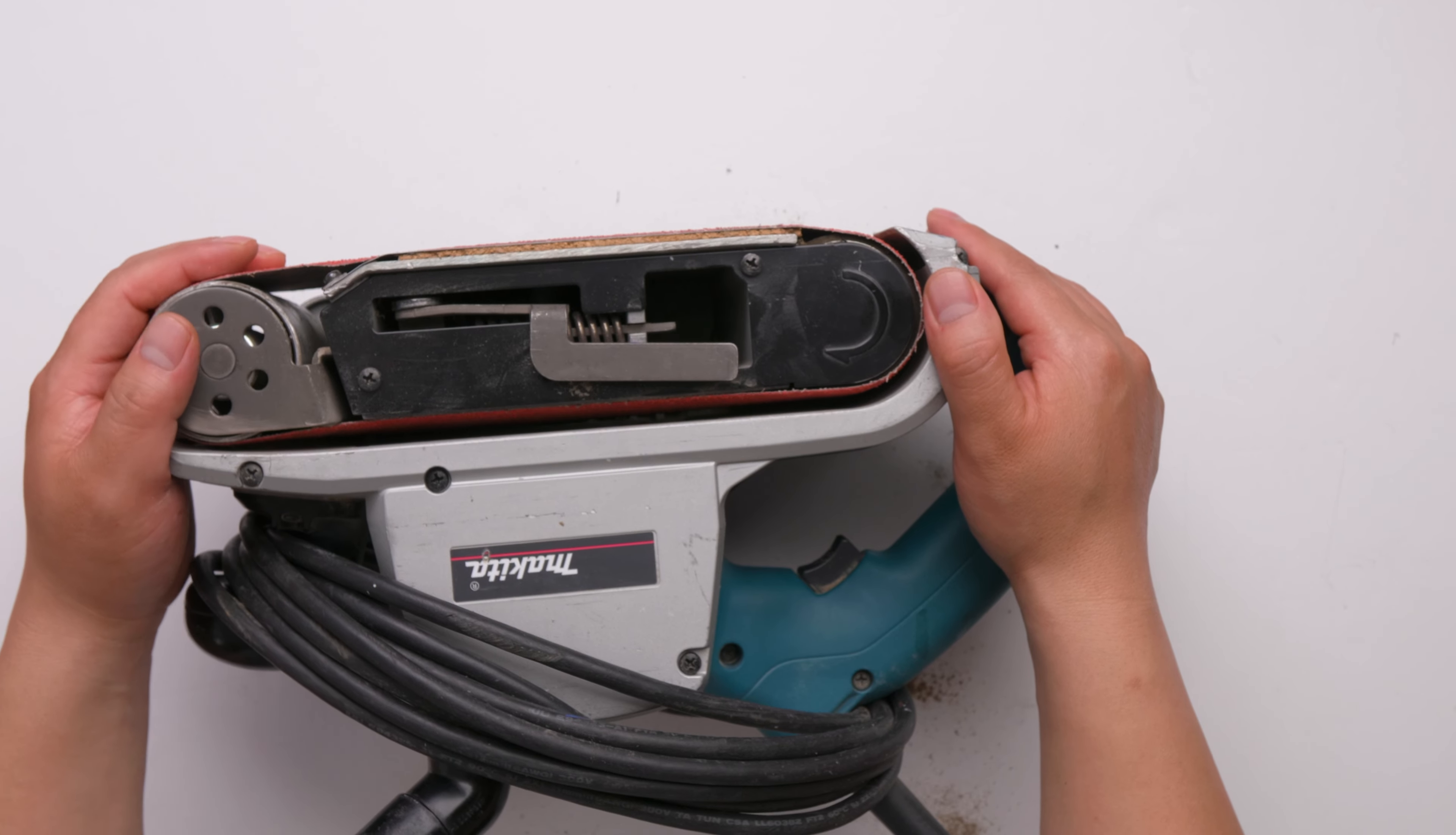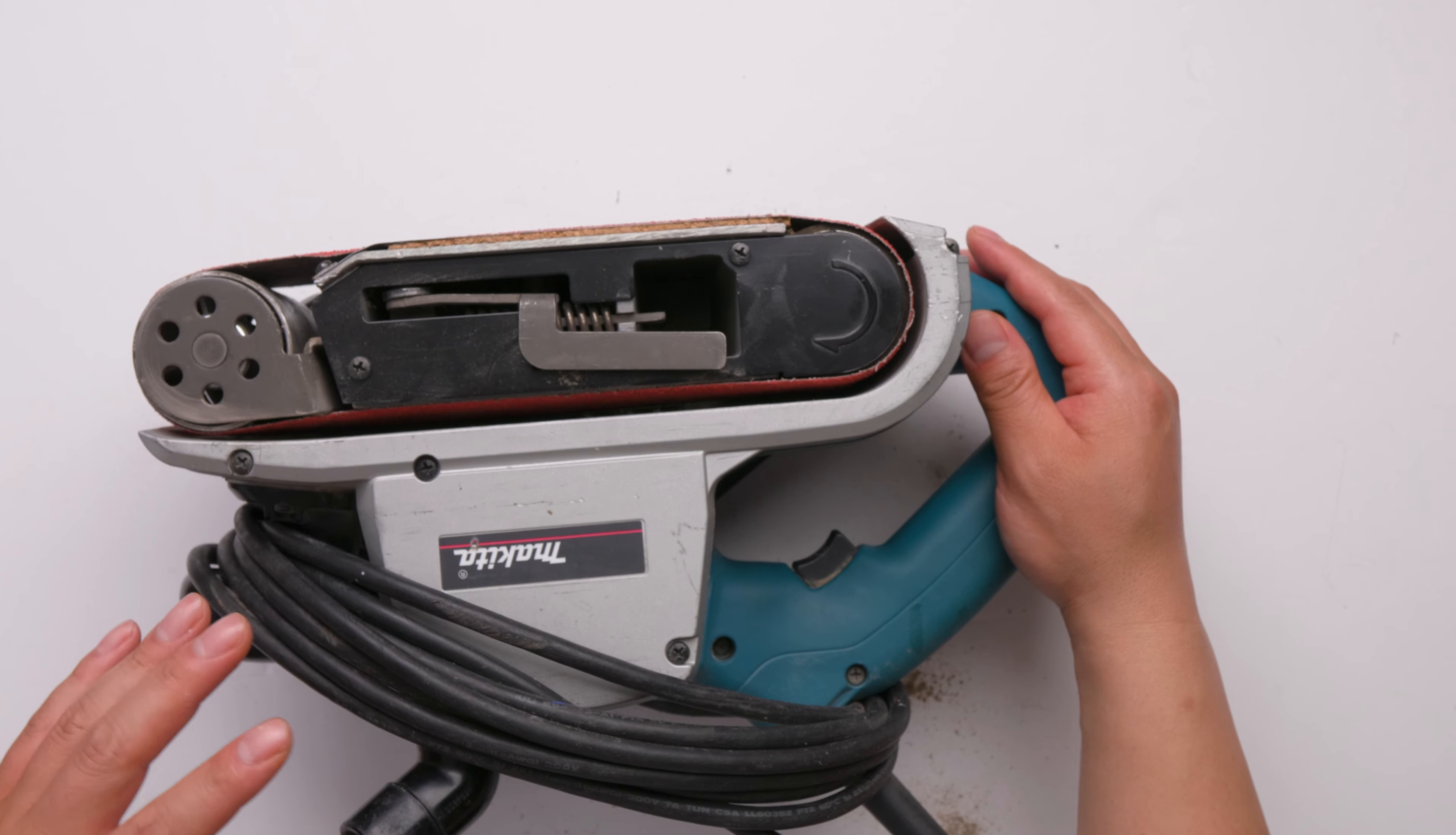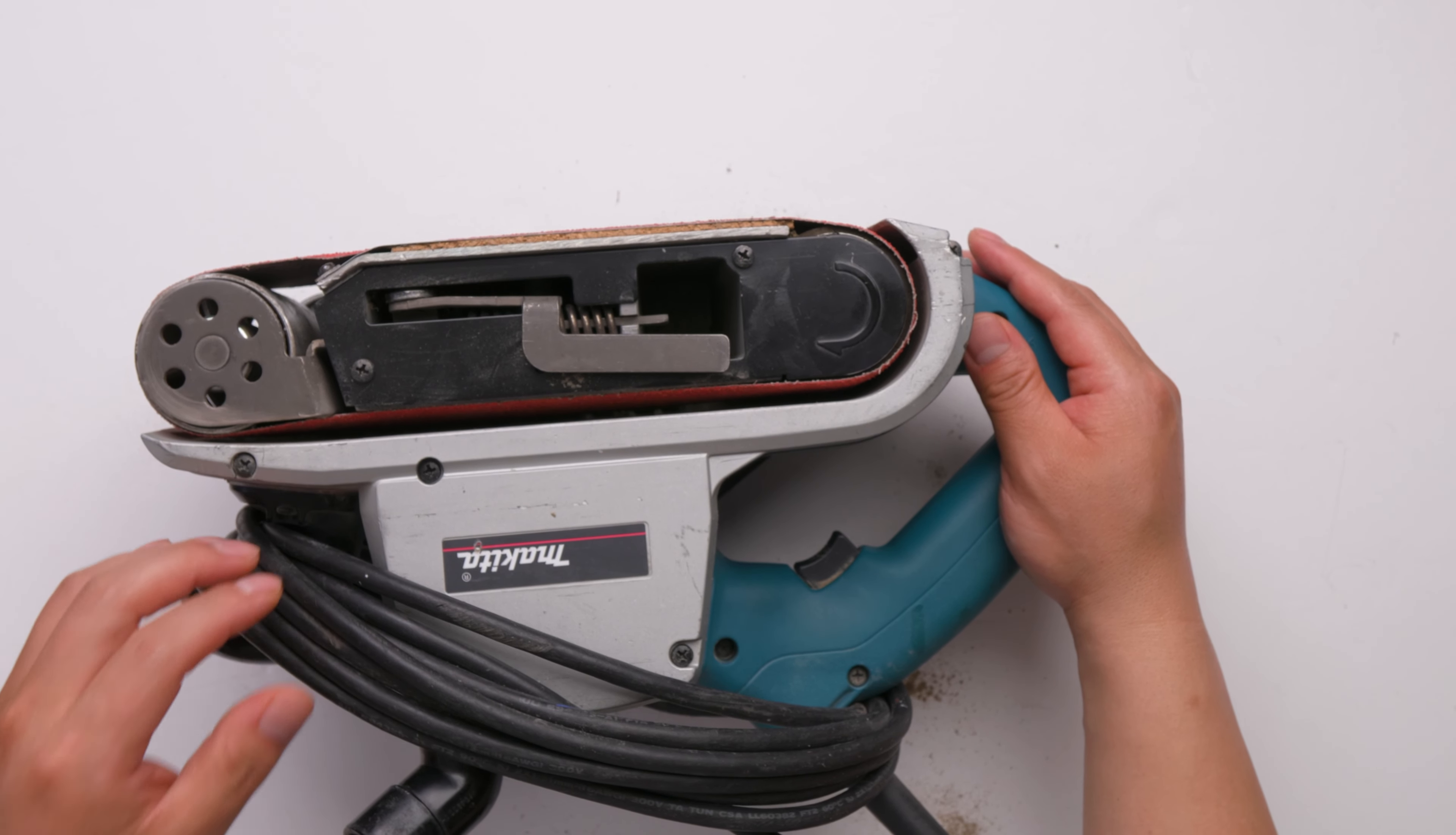You can choose the three-inch belt sander or this four-inch one. If you have a lot of material to sand, you're going to need this one. It's faster, stronger, has lots of power, and removes material pretty quickly.